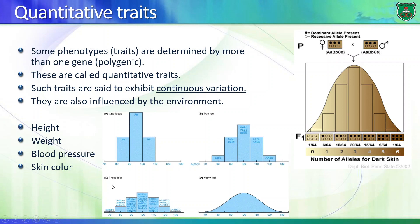If you have three loci, you get yet another distribution pattern. If you have many loci associated with a phenotype, you get something that looks like a bell shape — a normal distribution. This is true for conditions such as height, weight, blood pressure, and skin color.